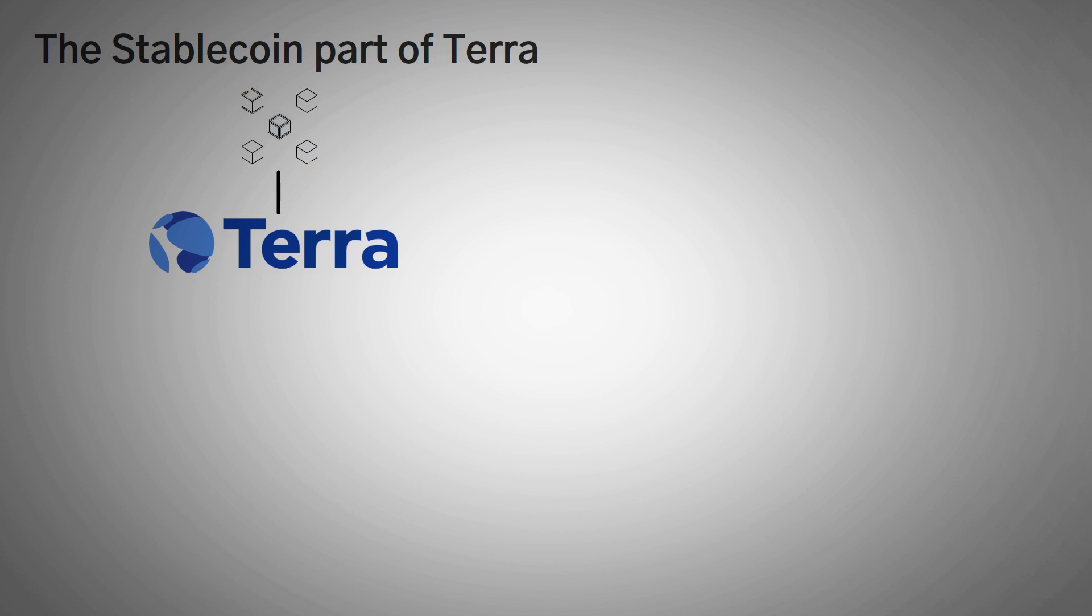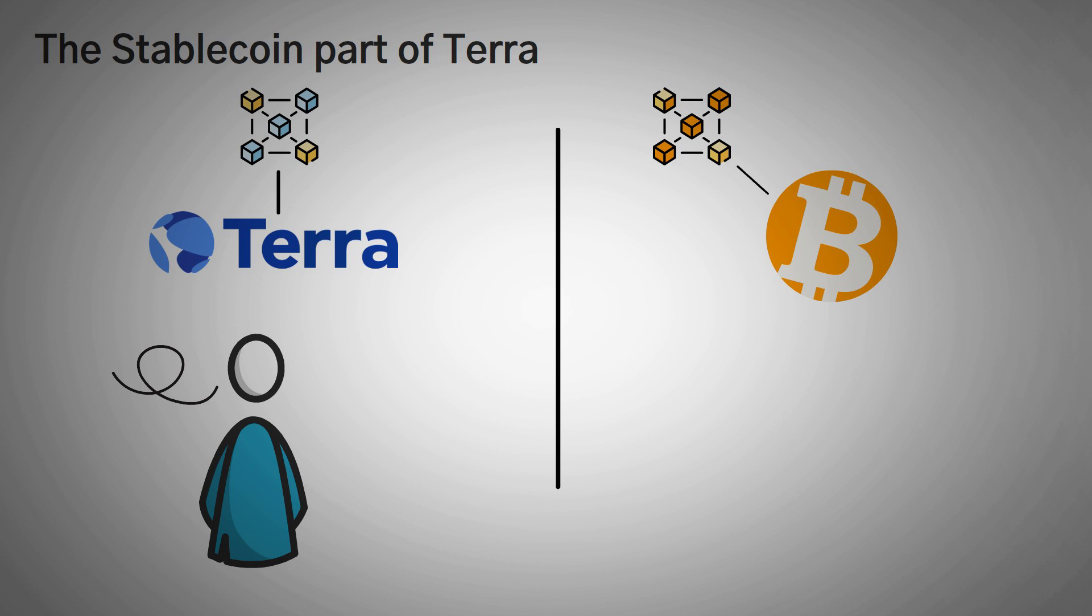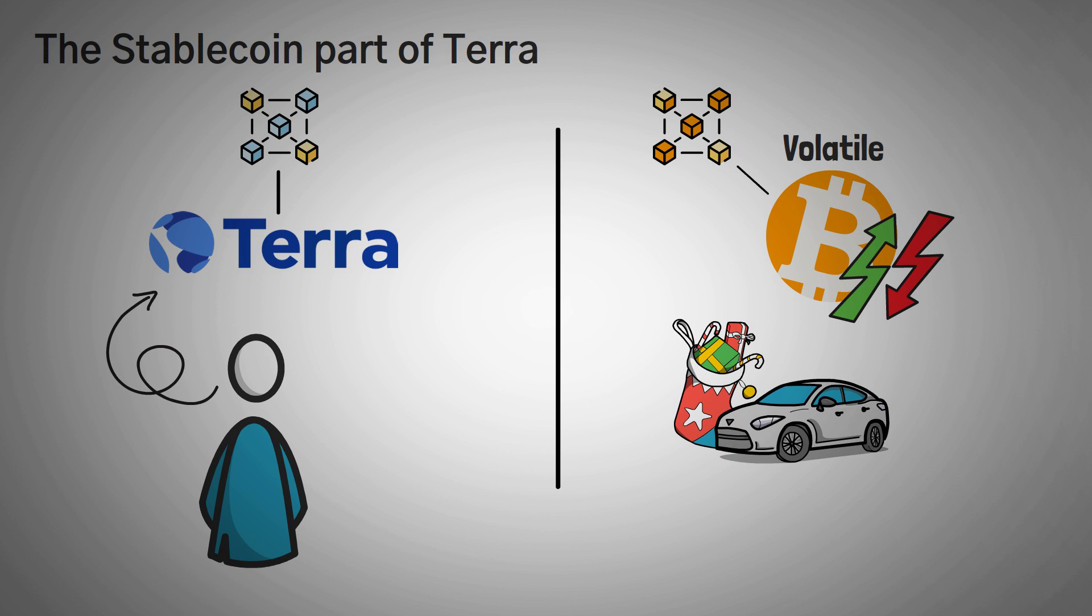So think about this question. Terra uses a blockchain, right? And Bitcoin uses a blockchain too. Well, what's the difference? Why would a merchant want to use Terra when they could use Bitcoin? Well, here's the thing. Bitcoin is volatile. The value of Bitcoin measured in dollars changes constantly, I mean all day long. This is important because we usually measure things in dollars. Whether that's a bag of candy, a car payment, your rent, everyone thinks in dollar bills.